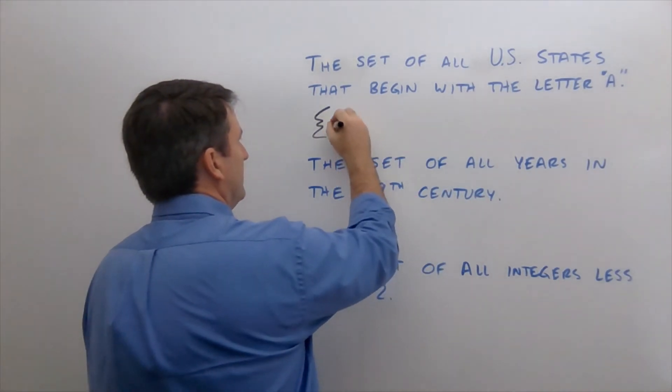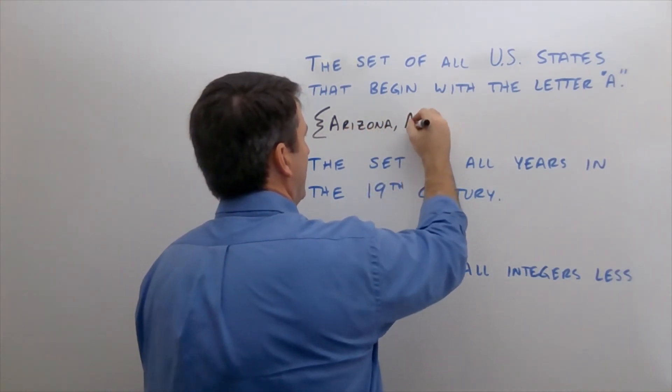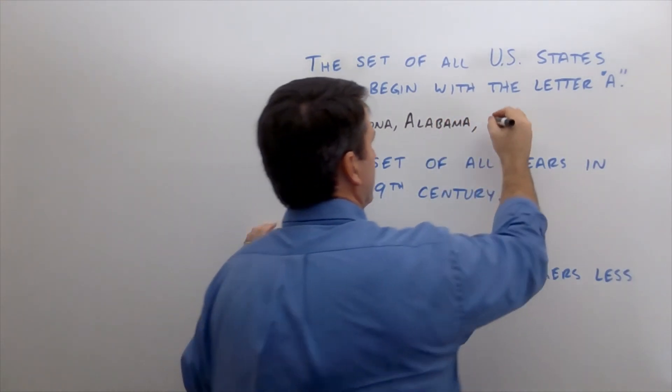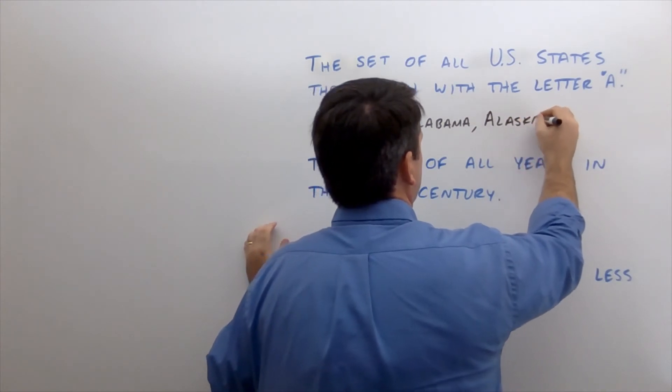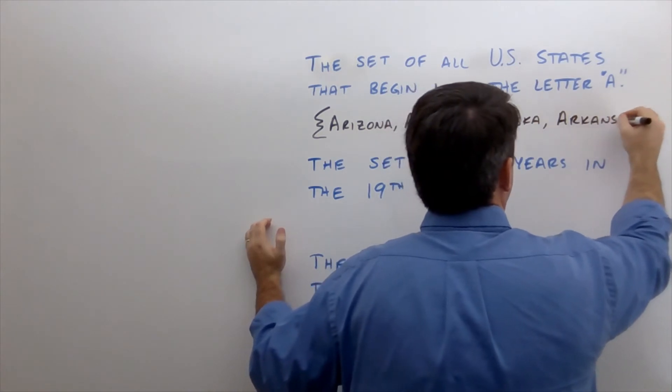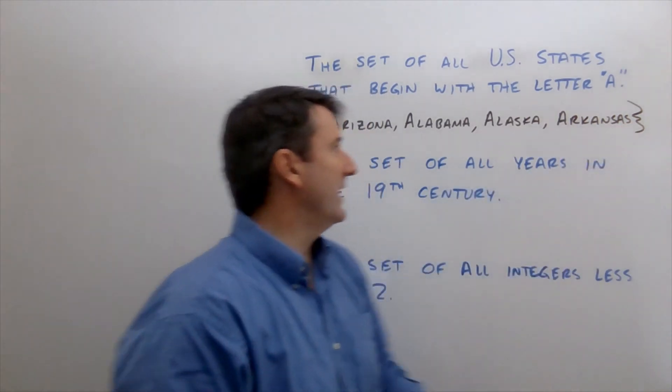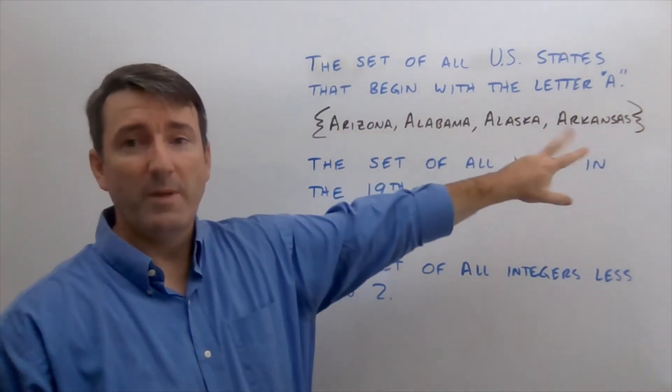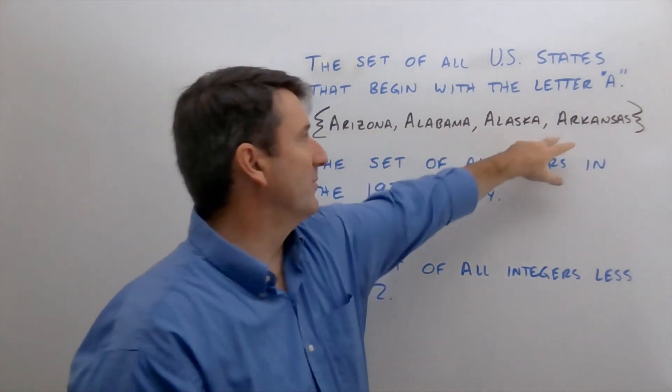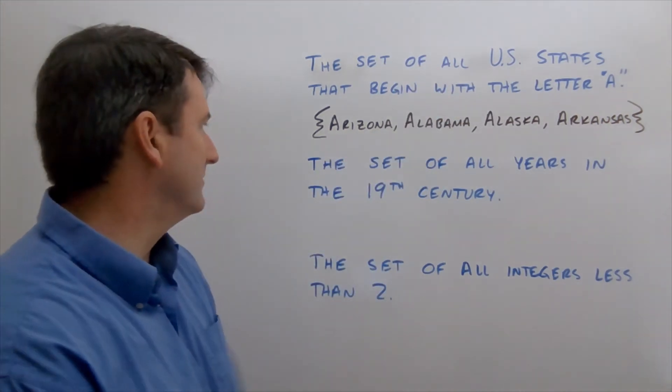So let's start with Arizona. And then we've got Alabama, and Alaska, and Arkansas. And then we'll close that off with another brace on the end there. So we've just got four members of this set. We're going to list them all out with commas separating them in between two braces. And so that's this set in set notation.